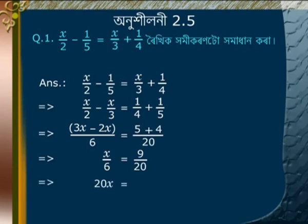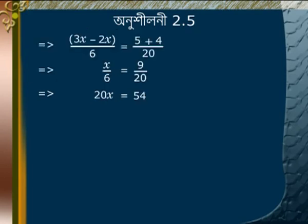Cross-multiplying both sides gives 20x is equal to 54. Dividing both sides by 20 gives x is equal to 54/20, which simplifies to x is equal to 27/10. That is the answer.